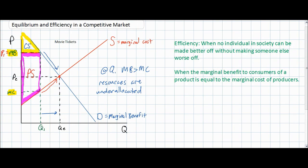The triangle representing consumer surplus is clearly lower at P1 and Q1 than at PE and QE. Therefore, this is an inefficient allocation of resources at Q1, mostly because the increase in producer surplus comes at the expense of consumers who enjoy a smaller area of consumer surplus. At Q1 and P1, there is a loss of total welfare represented by the blue triangle, which we call the welfare loss or deadweight loss (DWL) of a disequilibrium in the market.